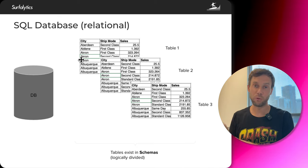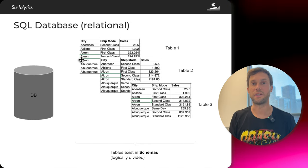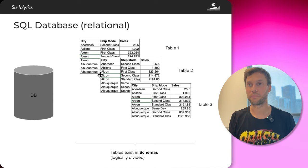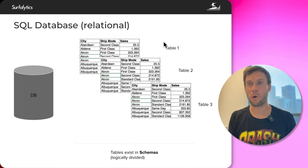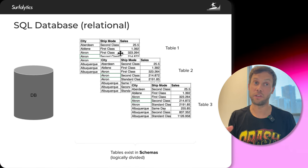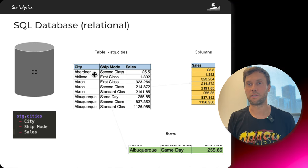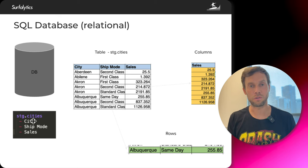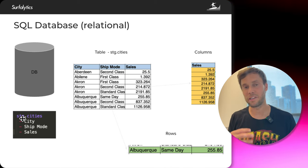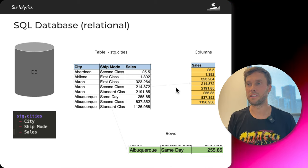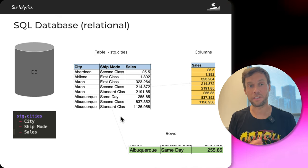First, you need to put data in the database — we'll learn how to do that — and then how to query the data. In this example, I have three tables. You can see the columns, the rows, and the headers. The header of a table is actually the column name. For example, this table is called 'cities' and inside it we have columns: city, ship mode, sales. We also have the schema, which helps us organize the data. This is an example of a column, and this is an example of a row — a very simple example of a table, which you can find in any database.